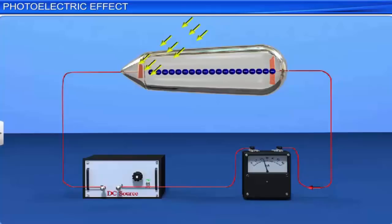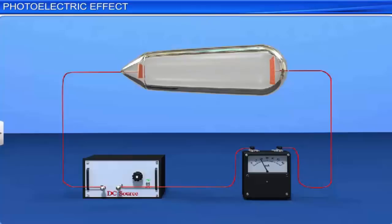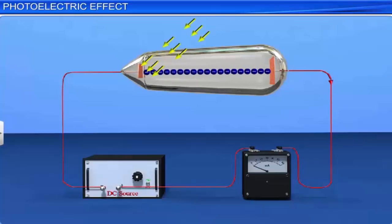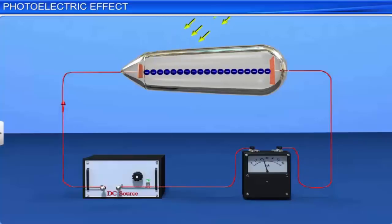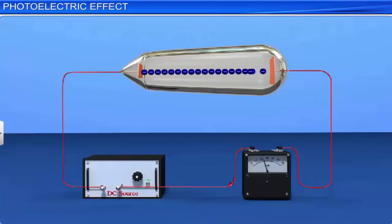He also observed that as soon as the ultraviolet radiation was stopped, the current also stopped flowing in the circuit. It was evident from the experiment that as soon as ultraviolet radiation falls on a cathode plate, it emits electrons. These electrons are attracted by the positive collector plate and start flowing towards it. As a result of the flow of electrons inside the glass tube, an electric current is observed in the external circuit.